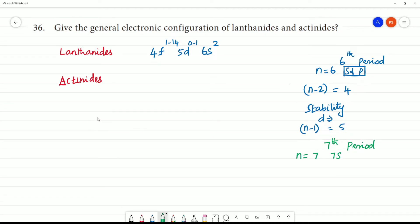So, s to be filled in nth period. That is 7s². This is penultimate shell. Inner shell. Inner transition element. So we call it as F block elements. Inner transition.